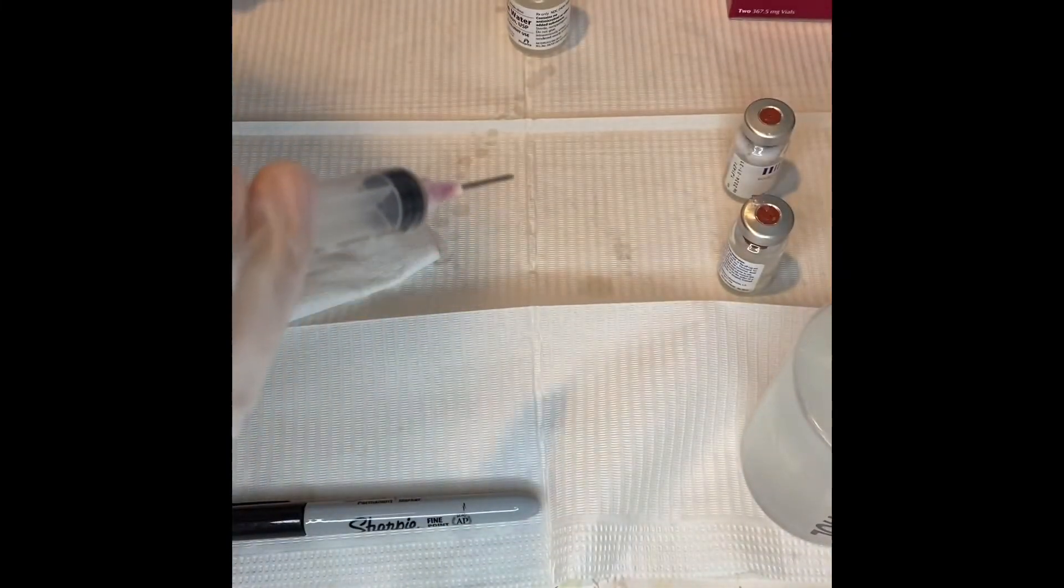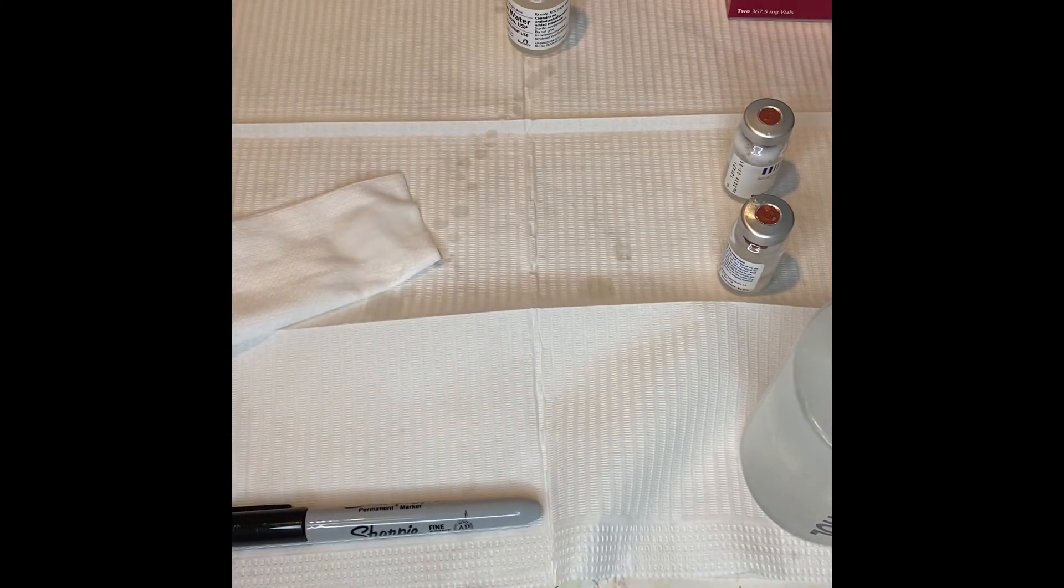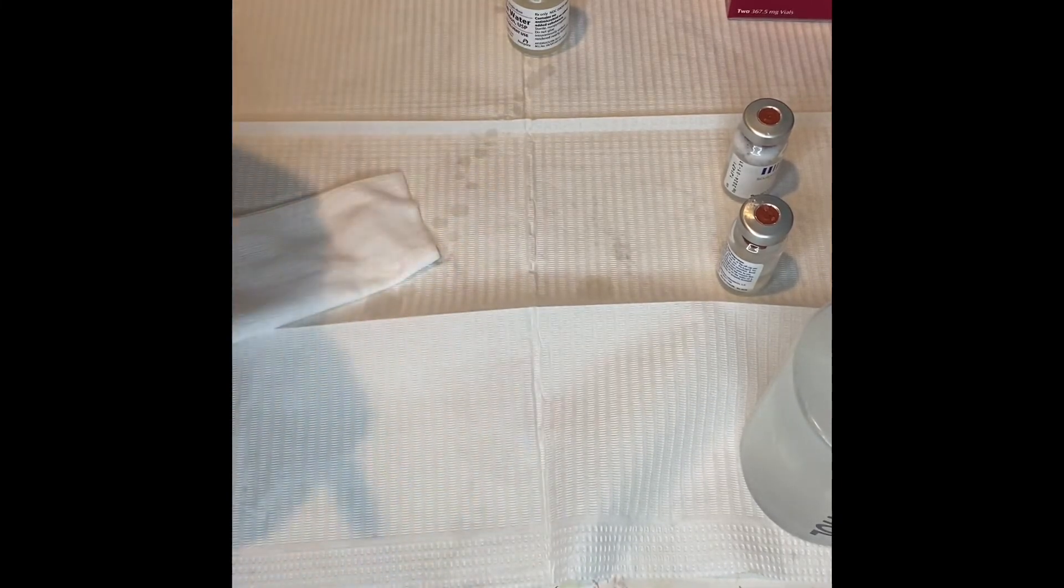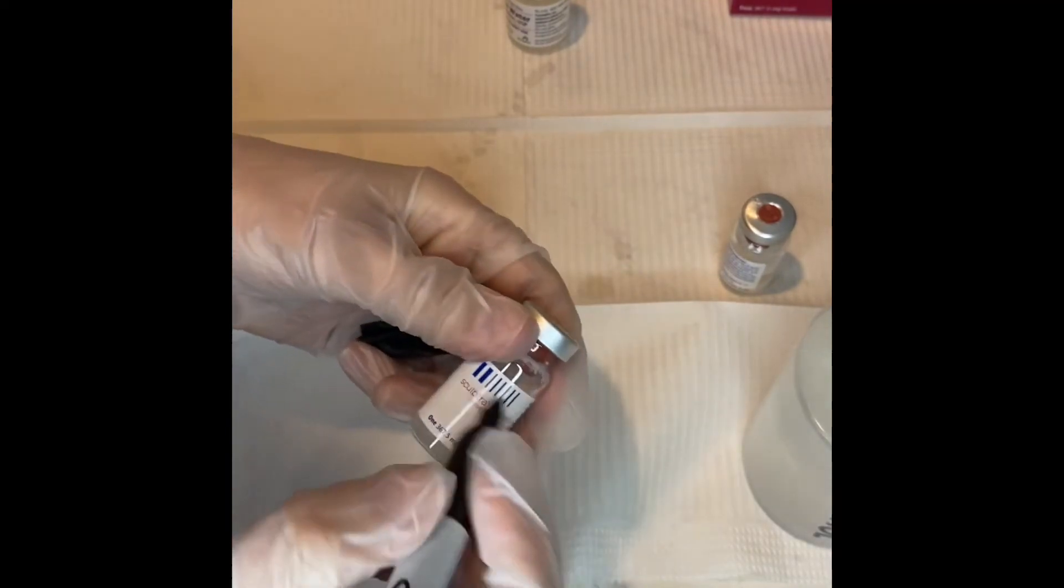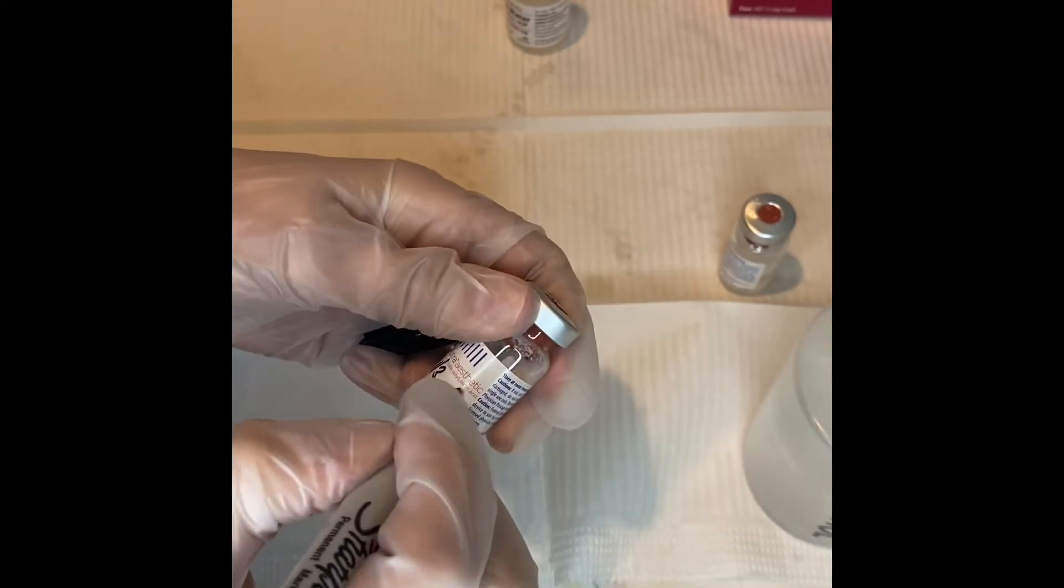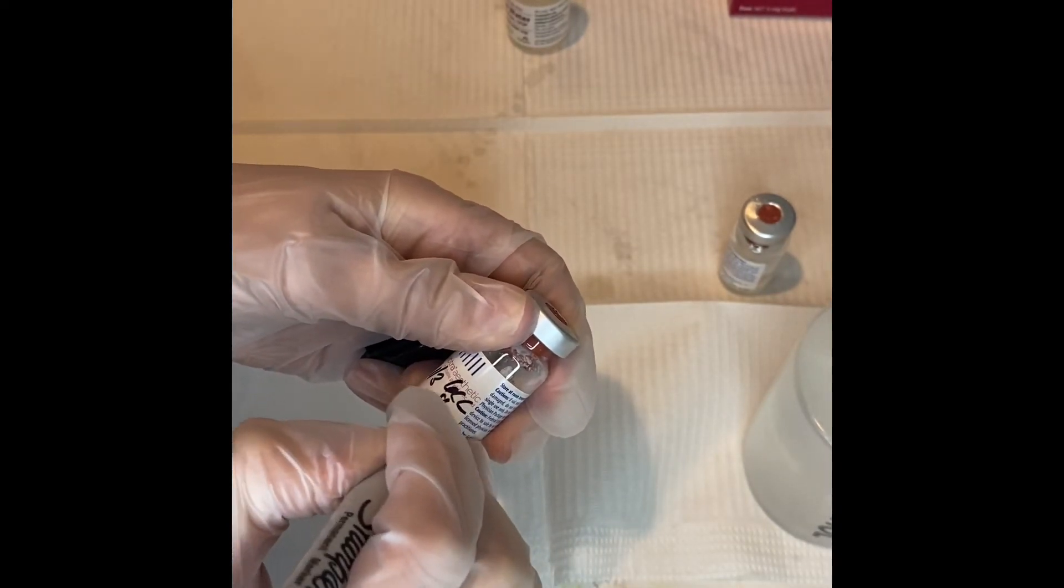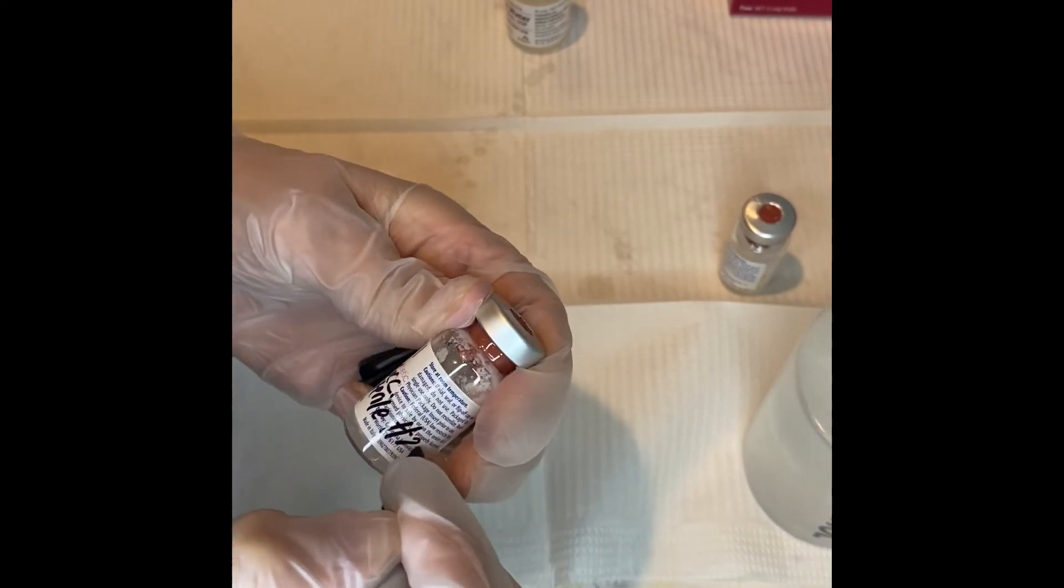And that's it. I forgot one more thing - on the bottle you're going to write the date that it was pre-mixed. So today's 11-3, and just putting what I mixed it with: six cc's of sterile H2O. And then I'm also writing it in the box - six cc sterile H2O.